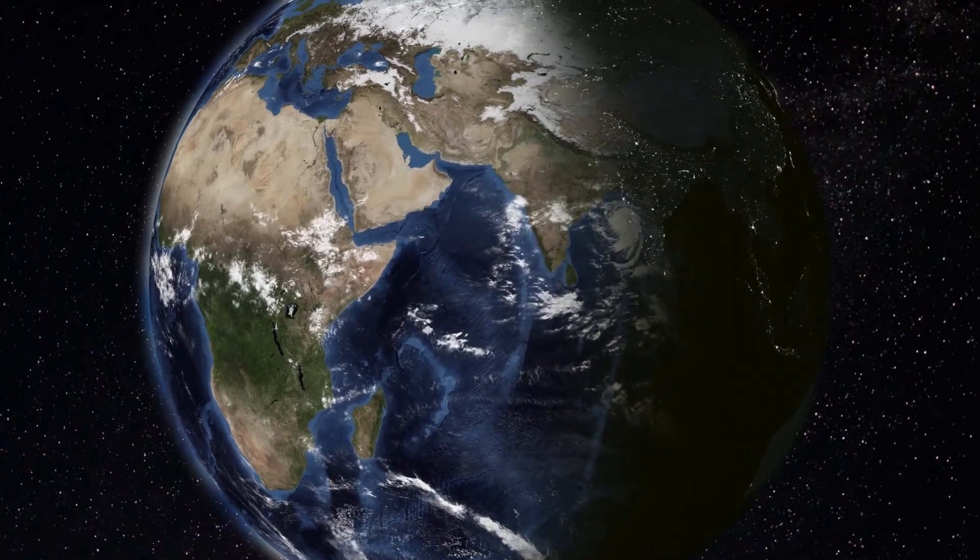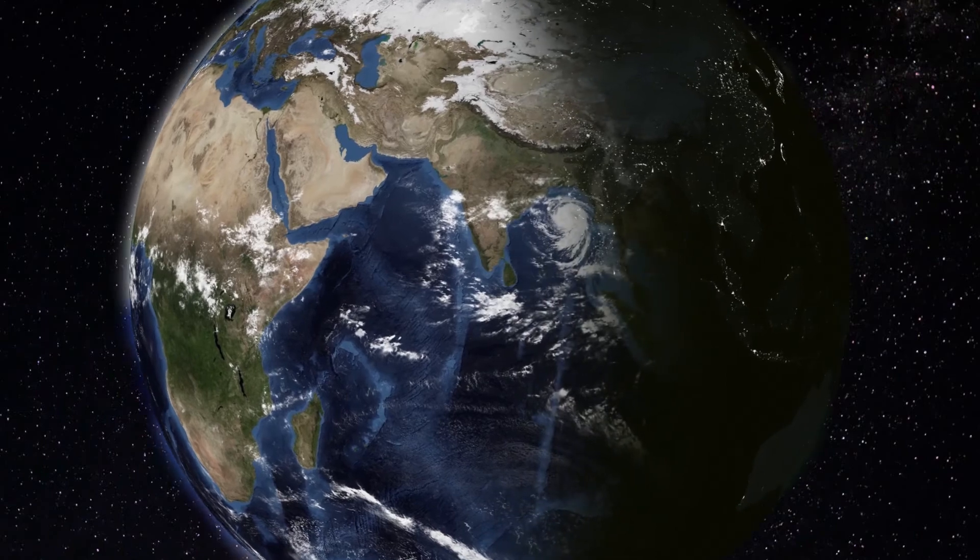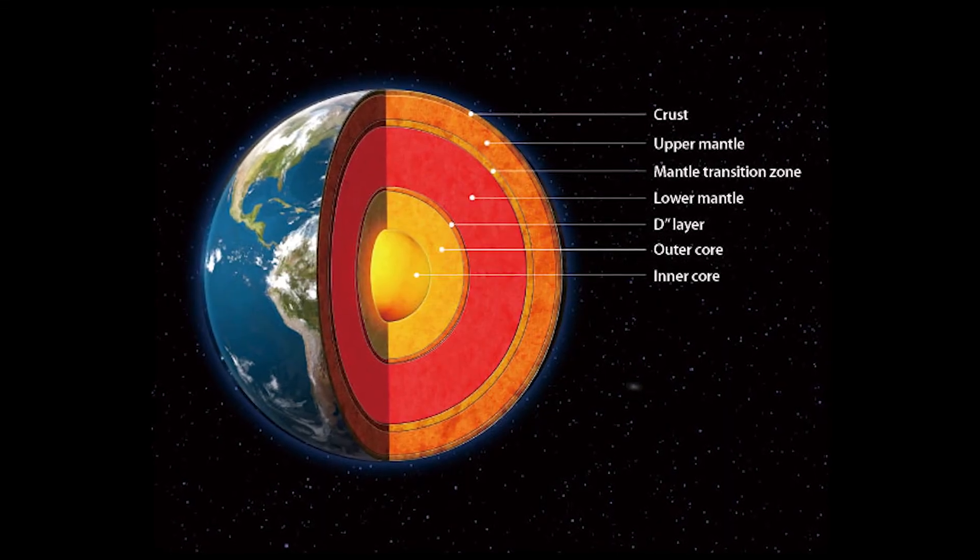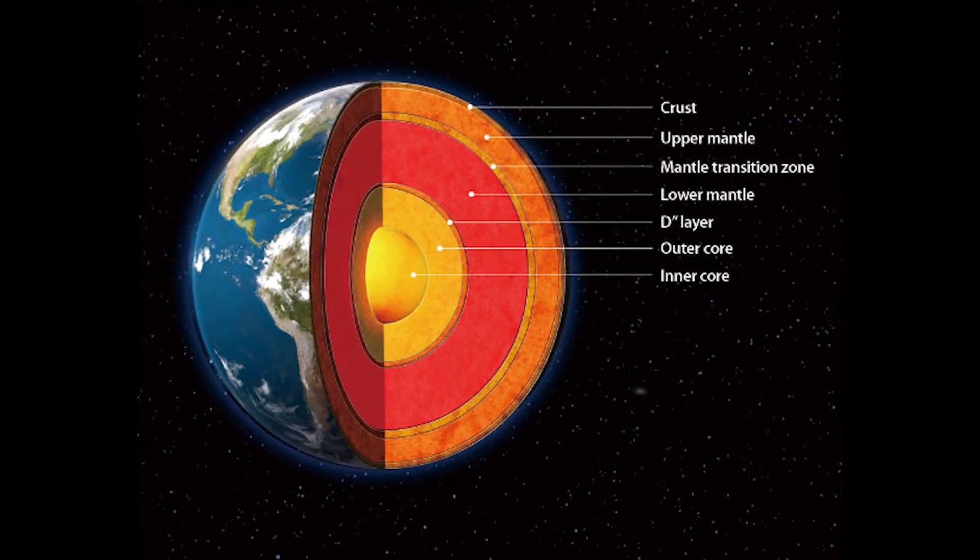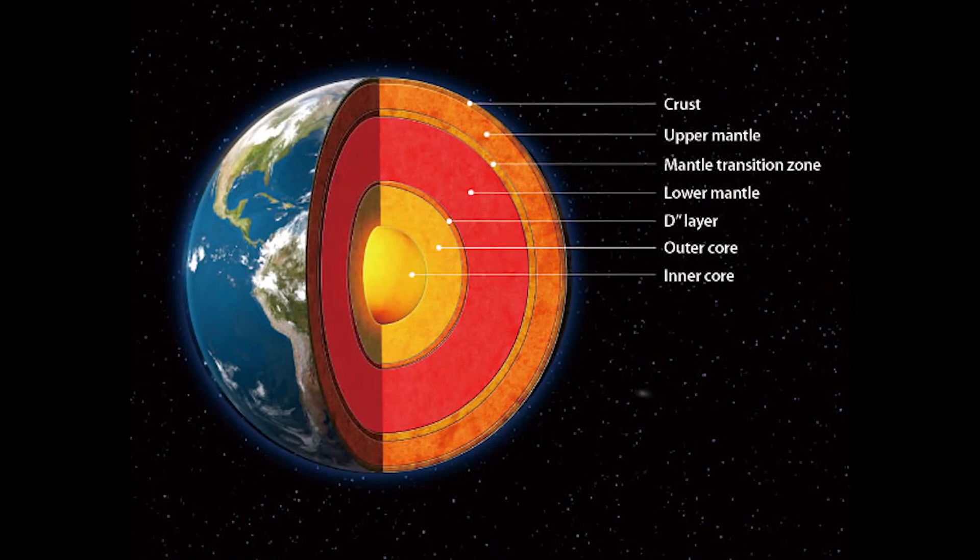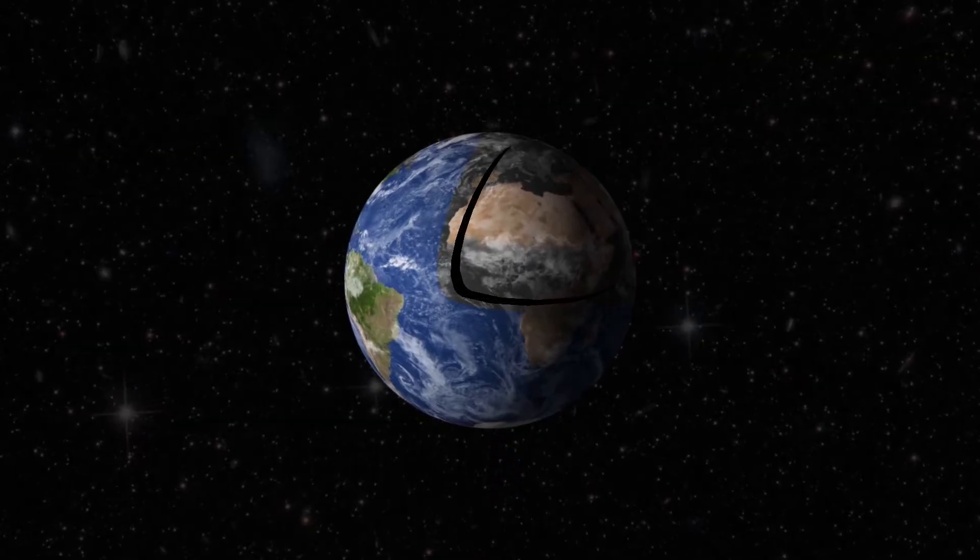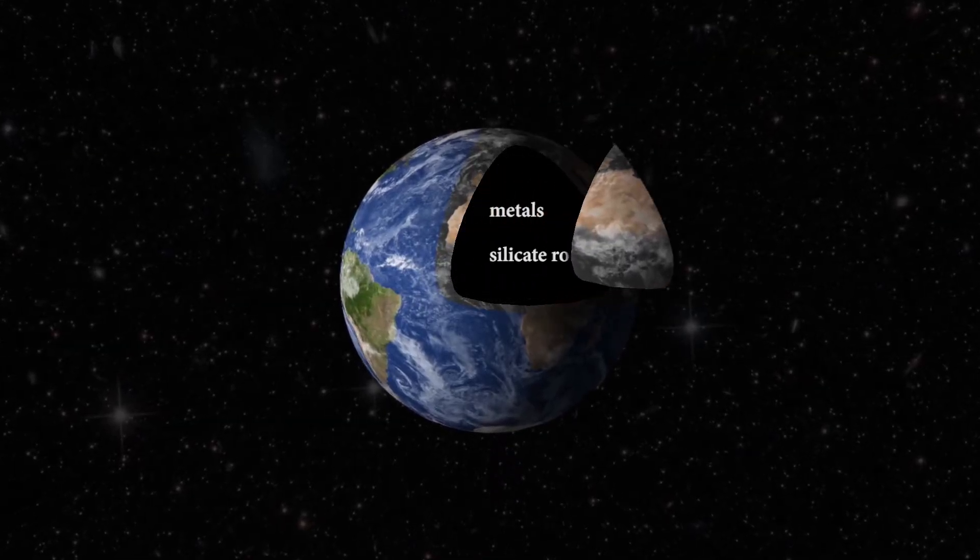Most research like this is done on Earth. Earth is divided in three main layers, known as the crust, the mantle, and the core, each with its own sub-layers. Once you go deeper into the Earth, the temperature and pressure rises, giving you different metals and silicate rocks.